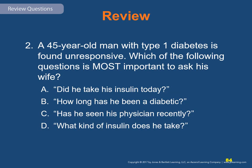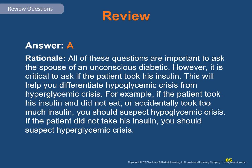Question 2: A 45-year-old man with type 1 diabetes is found unresponsive. The most important question to ask his wife is: Did he take his insulin today? (Answer A.) This helps differentiate hypoglycemic crisis from hyperglycemic crisis. If the patient took insulin and did not eat or took too much, suspect hypoglycemia. If the patient did not take insulin, suspect hyperglycemia. Questions about diabetes duration, recent physician visits, and insulin type are all part of the SAMPLE history but are secondary to determining insulin intake.